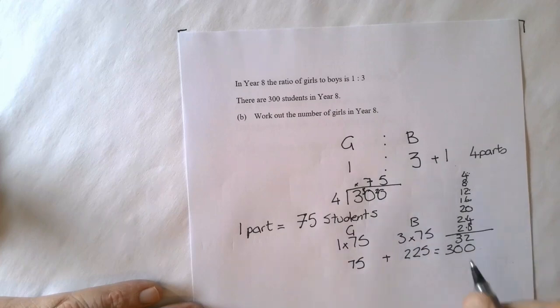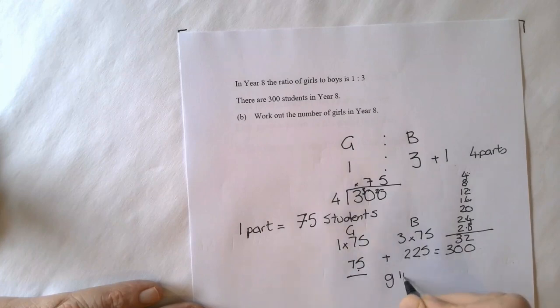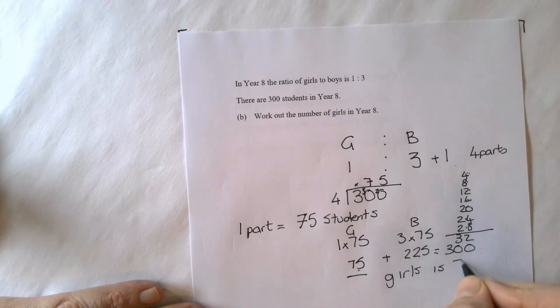So the question asks, how many girls were in year 8? Girls is 75. So girls is 75. And that's your answer.